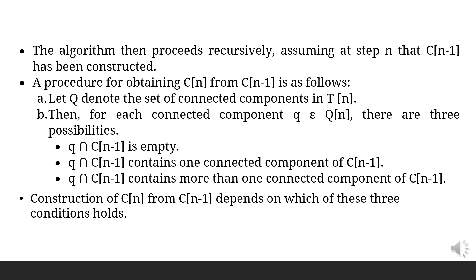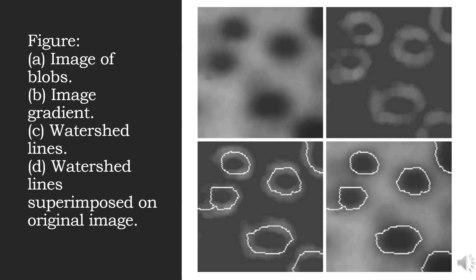Let q be a variable denoting the set of connected components in t(n). For each connected component q belonging to Q(n), there are three possibilities: first, q ∩ c(n-1) is empty; second, q ∩ c(n-1) contains one connected component of c(n-1); third, q ∩ c(n-1) contains more than one connected component of c(n-1). Construction of c(n) from c(n-1) depends on which of these three conditions holds. In this image, part a is the image of blobs, part b is the image gradient, part c shows watershed lines defining boundaries, and part d shows watershed lines superimposed on the original image.